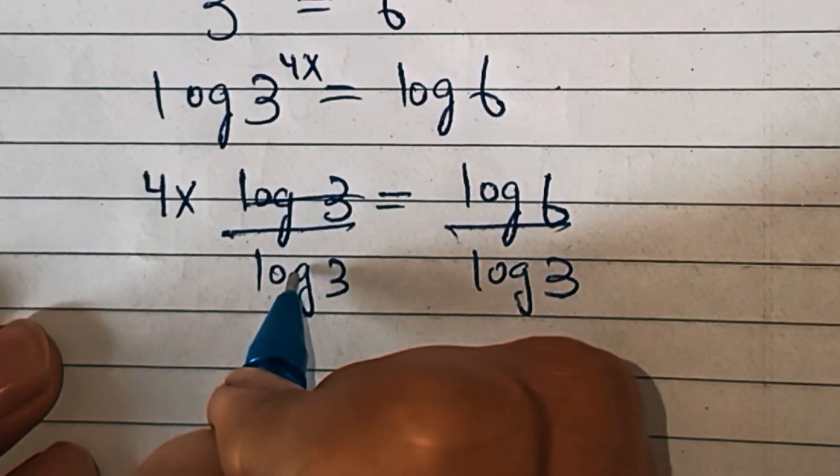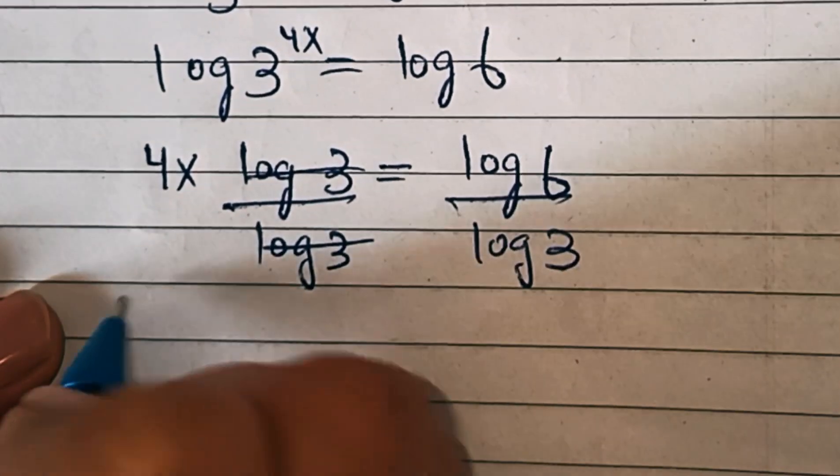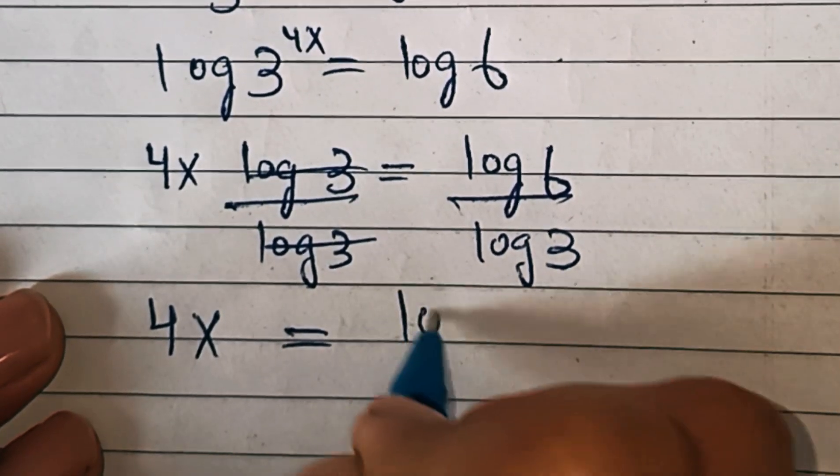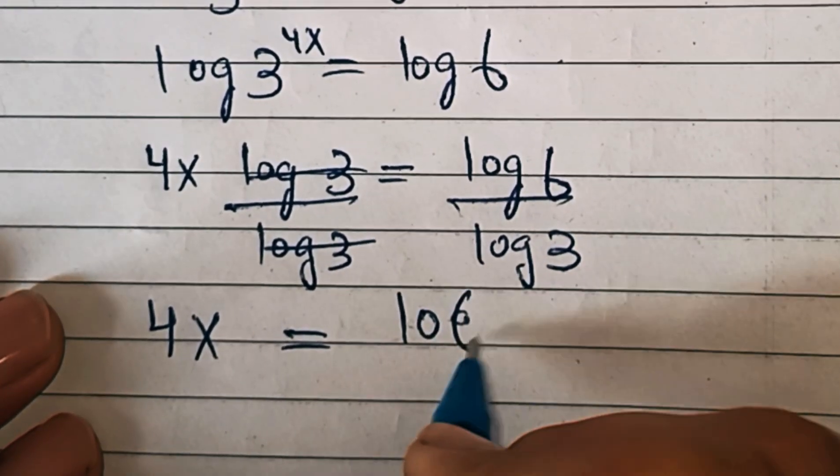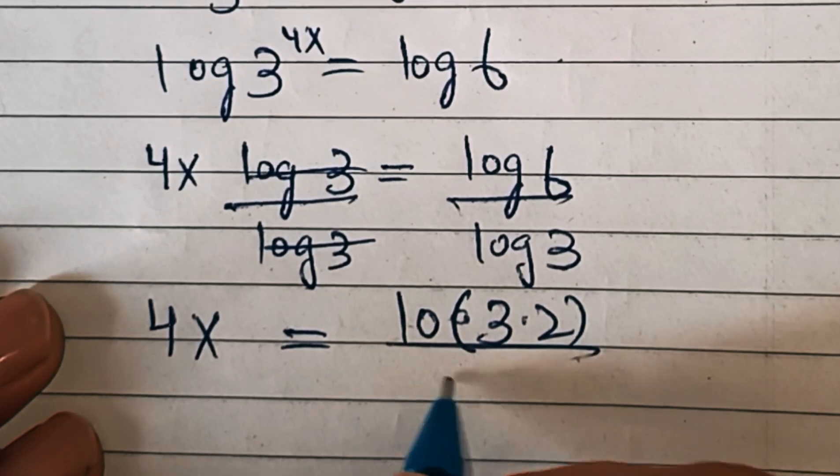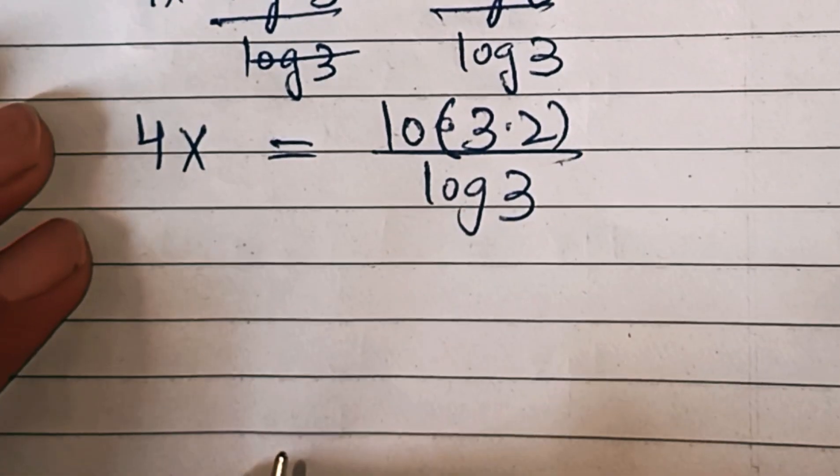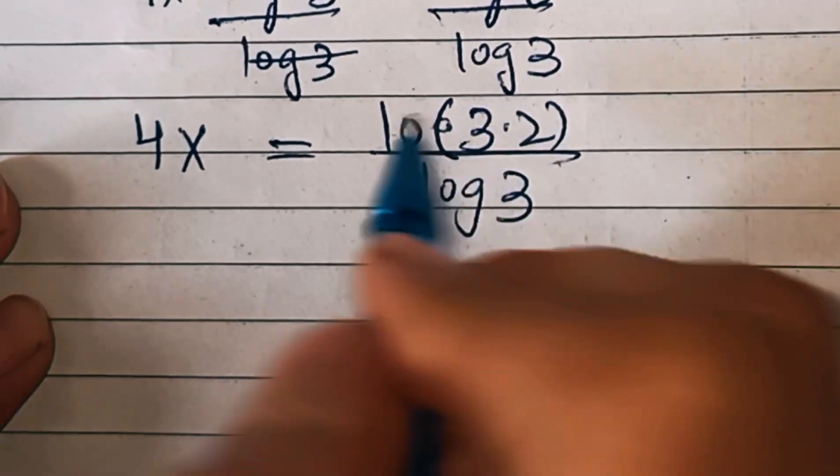Dividing by log of 3, we have 4x equals log of 6 over log of 3. Since 6 is the same as 3 times 2, we can write this using log properties.